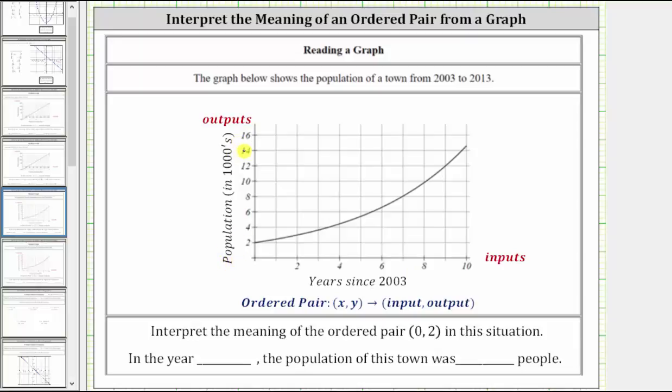Let's first locate the ordered pair (0, 2) on the graph. We begin by locating 0 on the horizontal axis, which would be here, moving straight up to the graph. This is the point on the graph where the input is zero, and because we are on the vertical axis, we can see the corresponding output is 2.